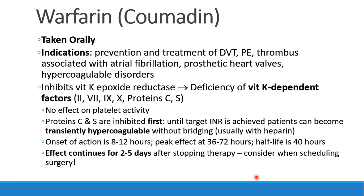The next drug we'll discuss is warfarin or Coumadin. This is not an IV drug — it's an oral drug. Patients take it to prevent or treat DVTs, PEs, a thrombus associated with atrial fibrillation or prosthetic heart valves, or hypercoagulable disorders. Warfarin works by inhibiting an enzyme called vitamin K epoxide reductase, which leads to a deficiency of the vitamin K-dependent factors: factors 2, 7, 9, and 10, and protein C and protein S. Warfarin doesn't have any effect on platelets. When you start warfarin, the first factors to be inhibited are proteins C and S. While the coagulation factors make clots, proteins C and S are actually anti-clot. So when we inhibit proteins C and S, patients can become transiently hypercoagulable. For that reason, we usually start patients on heparin, and once they're therapeutic on heparin, we start the warfarin. We continue the heparin until they are therapeutic on the warfarin, meaning they have their target INR, at which point we can stop the heparin.